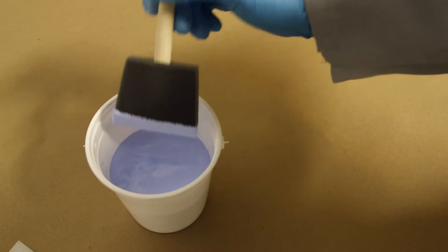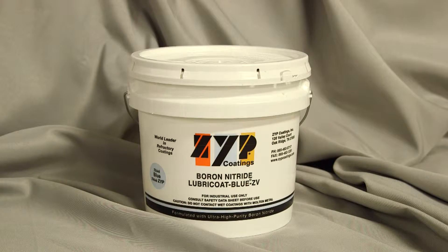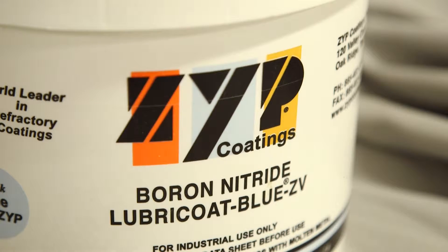To paint, merely dip the foam rubber brush into the undiluted BN Lubricote Blue ZV, which is the most commonly recommended paint for metals.